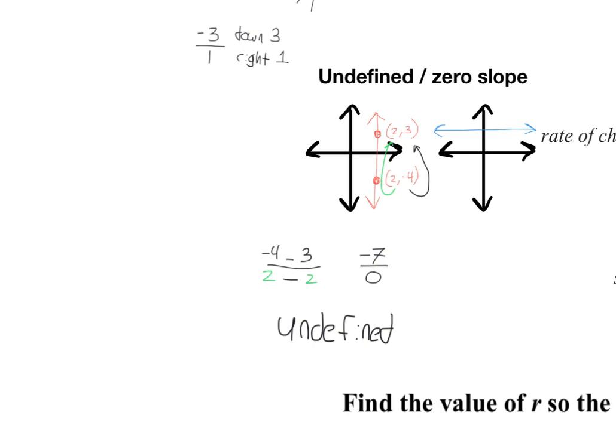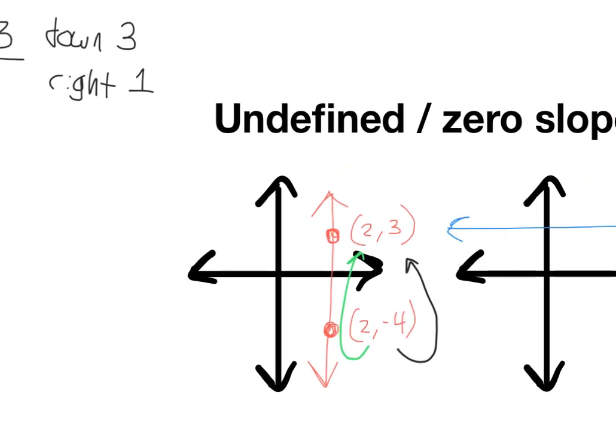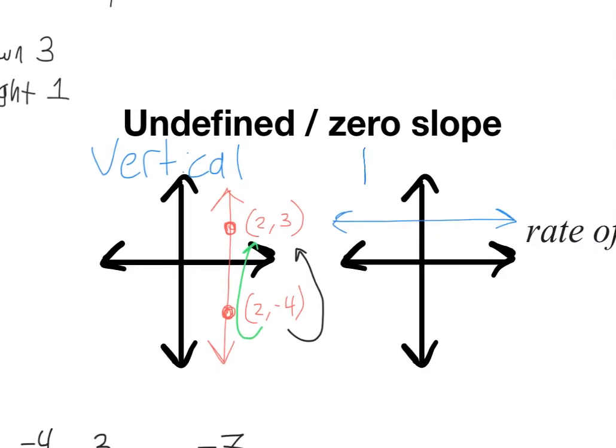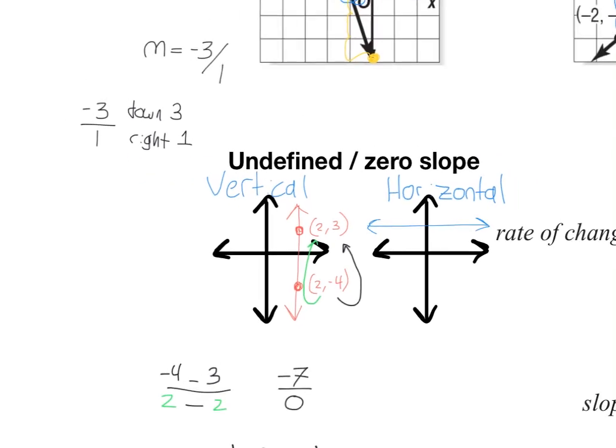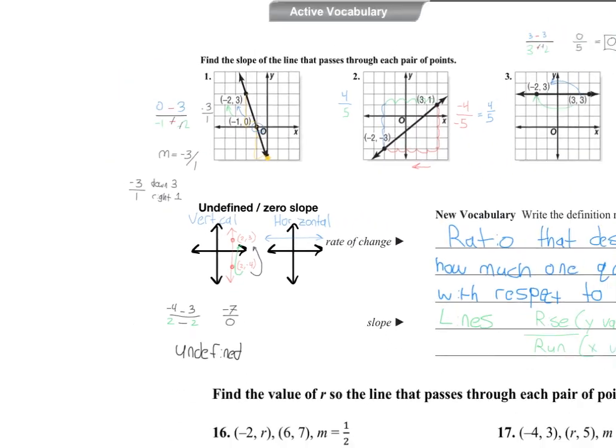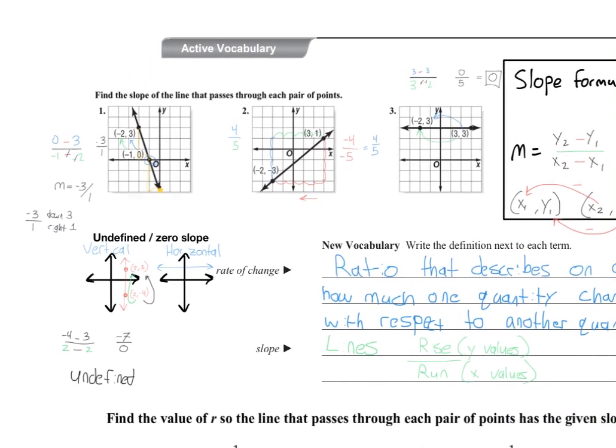And to conclude this video, let's just label here that these lines are vertical, and these lines of slope zero are horizontal. And we'll continue more of our conversations about slope and rate of change together in class.